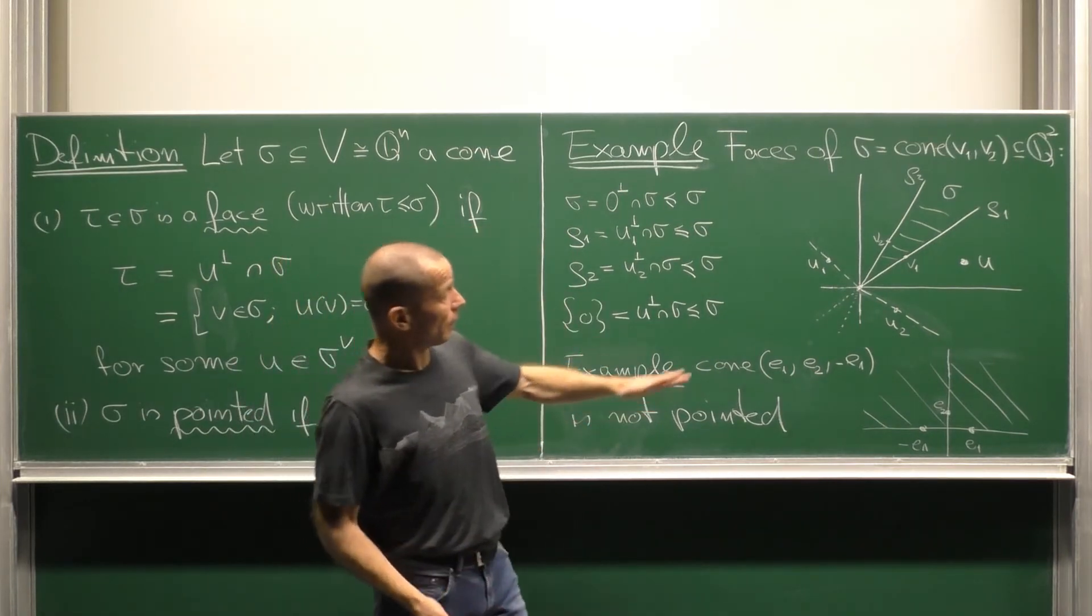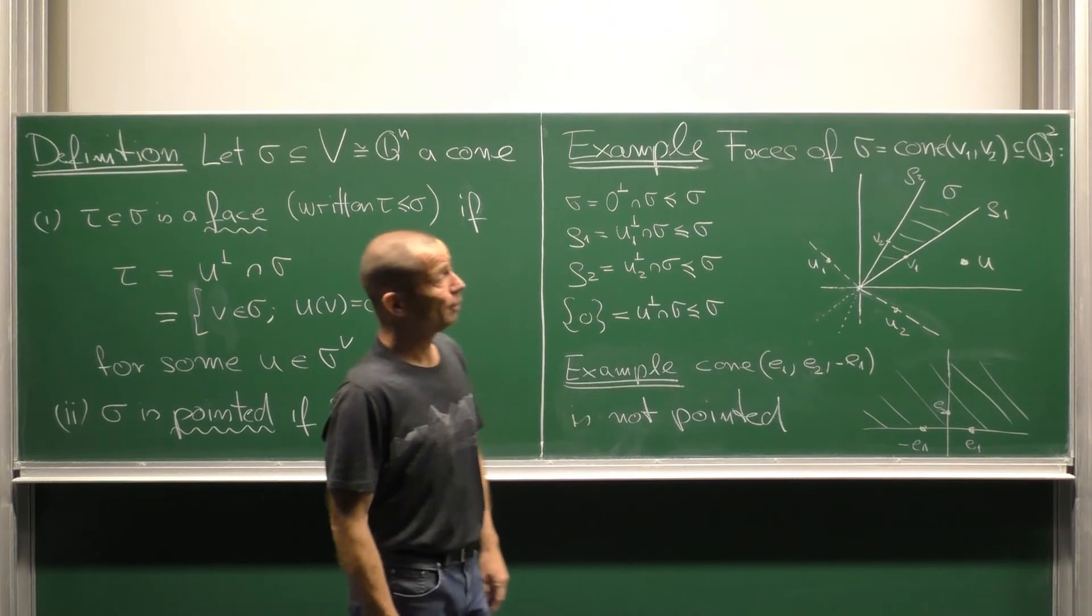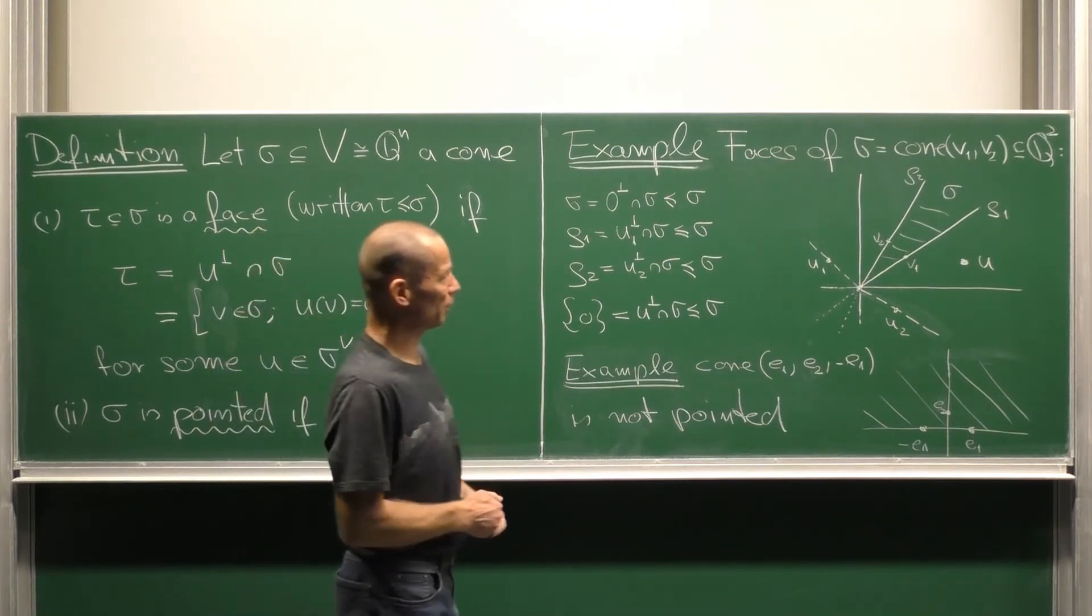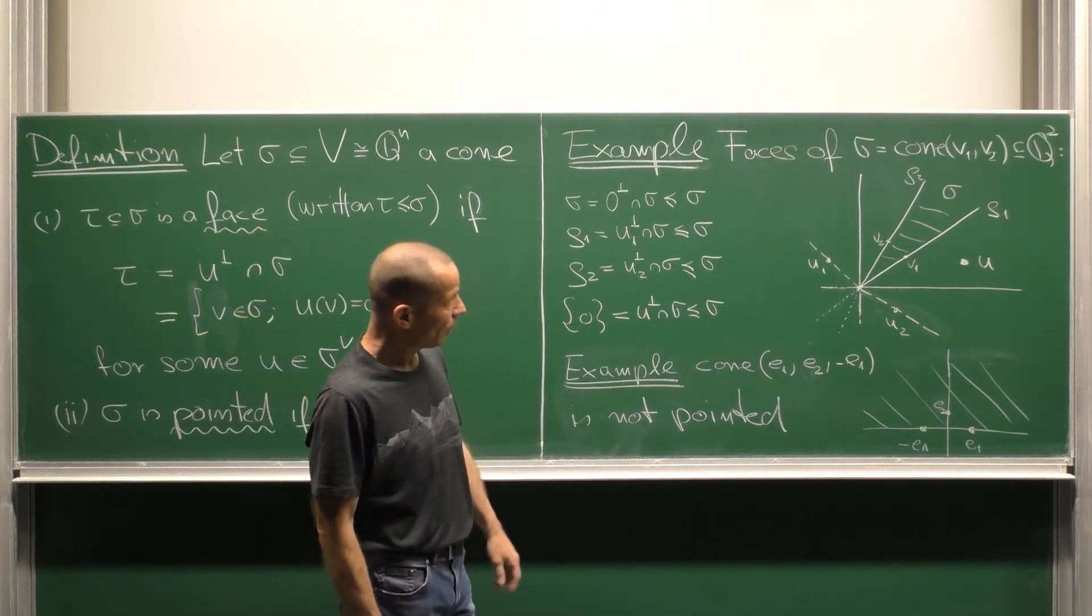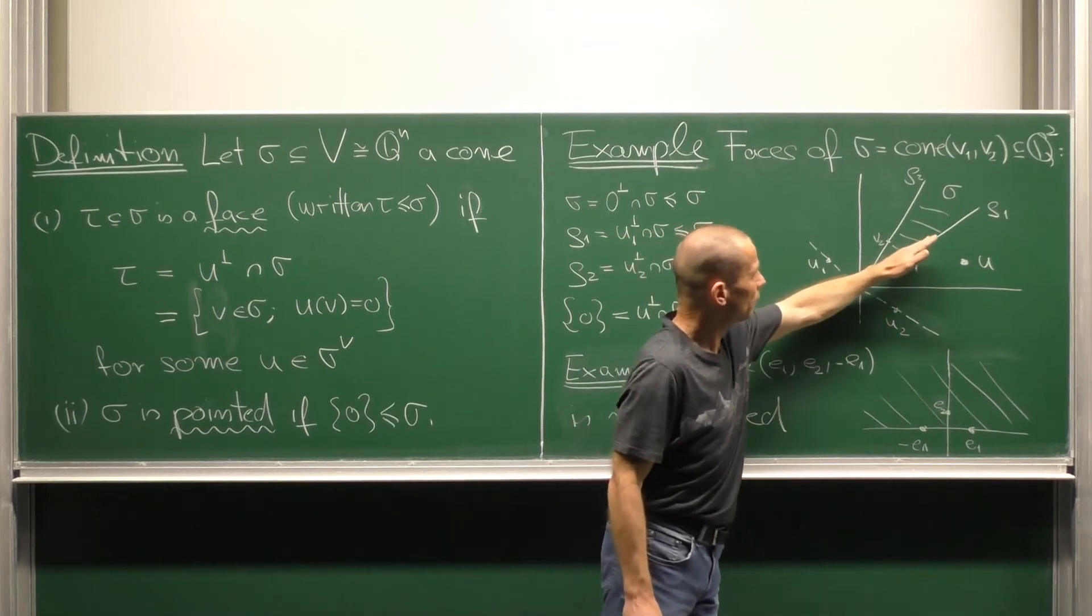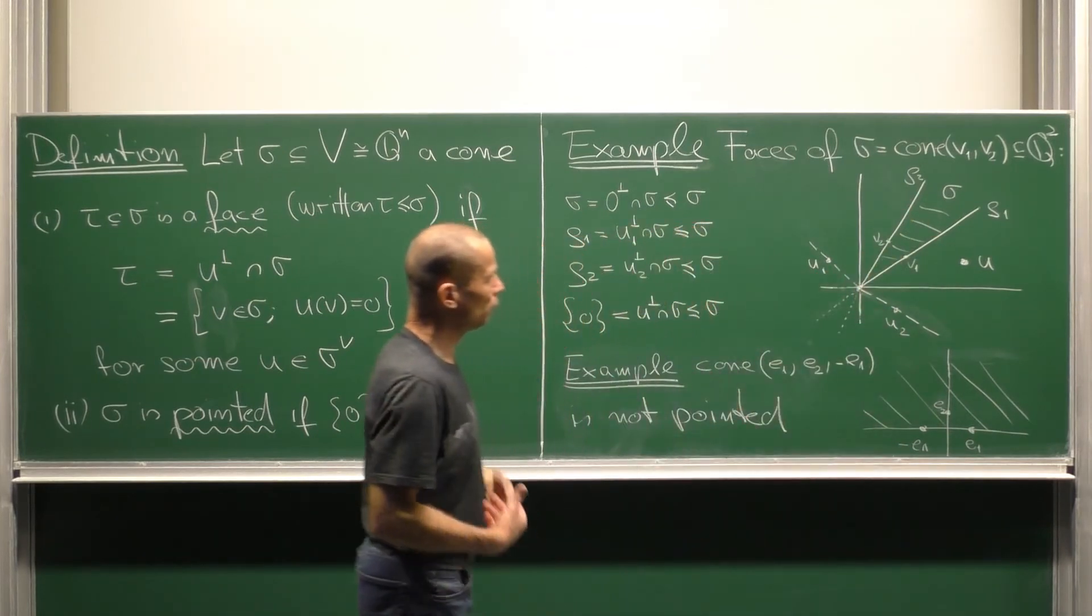Intuitively, it is clear that there are two more faces, two one-dimensional faces. These are the bounding rays, rho1 and rho2. How to obtain them?